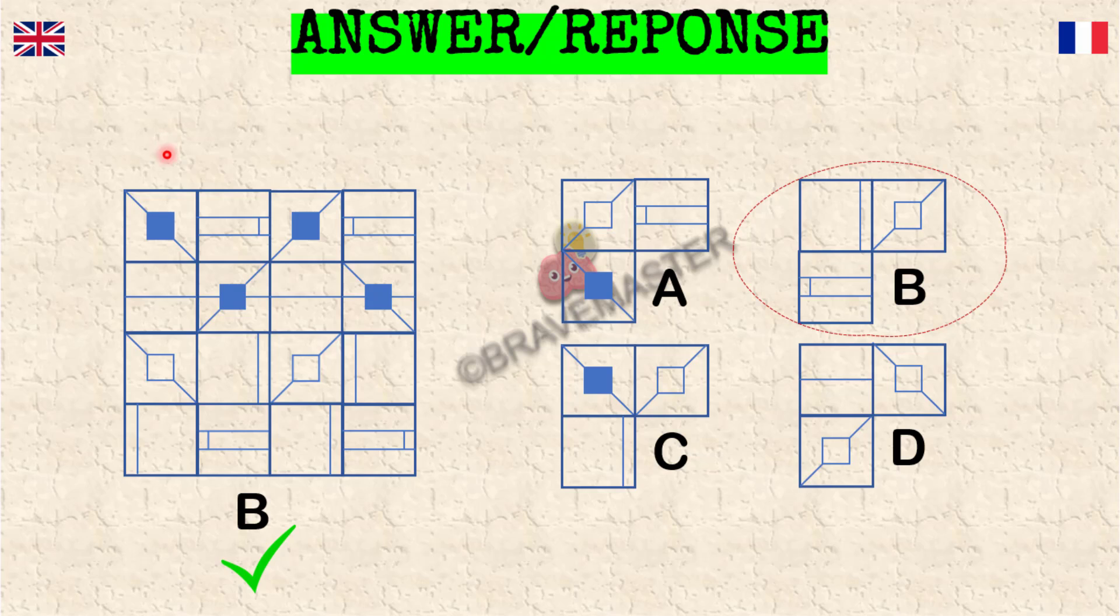The logic could be that the first column and the third column are mirroring each other, and so do the second and the fourth column. How difficult was that? Anyway, no worries if you didn't find it, you'll get another chance to try it out.